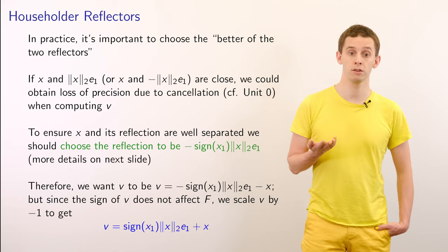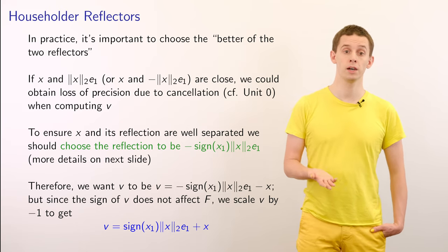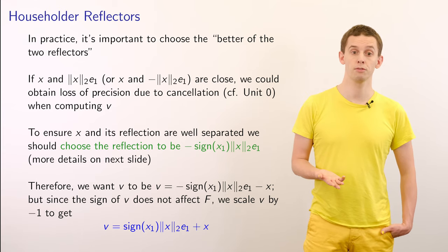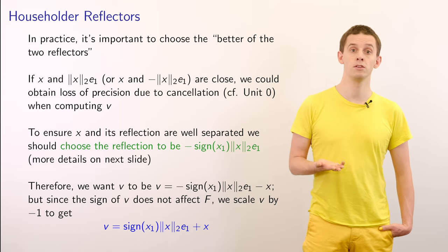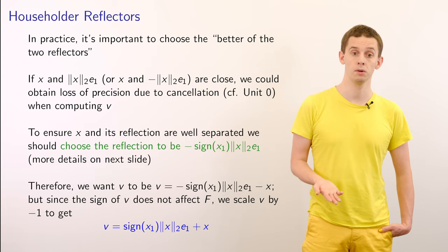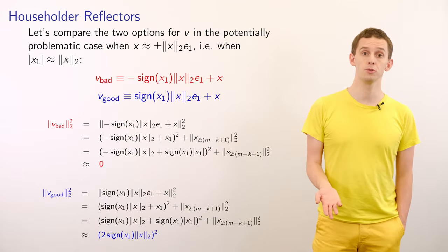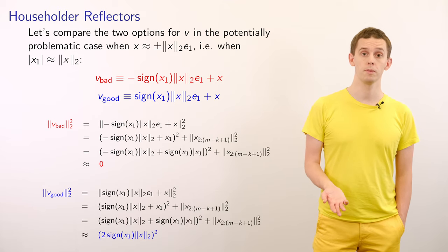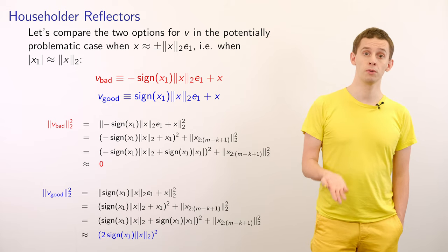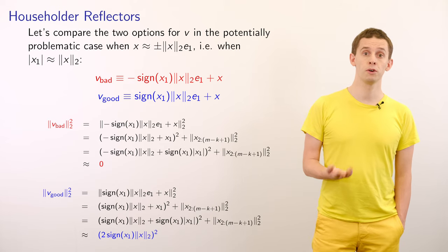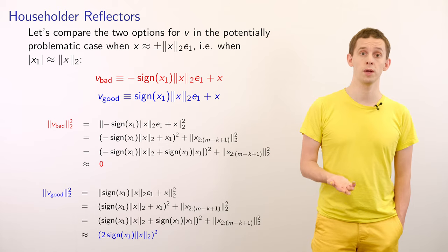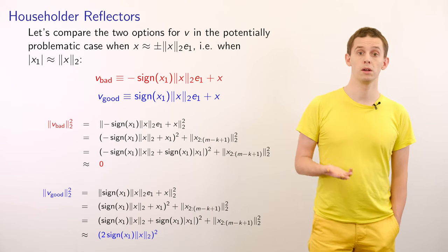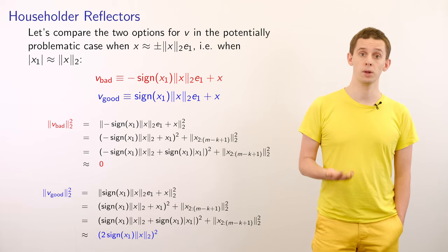To ensure that x and its reflection are well separated, we should choose the reflection to be equal to minus sign(x_1) times the Euclidean norm of x multiplied by e_1, where x_1 is the first component of x. Therefore, our vector V should equal minus sign(x_1) times the Euclidean norm of x times e_1 minus x. Since the sign of V does not affect F, we scale V by minus 1 to get V equal to sign(x_1) times the Euclidean norm of x times e_1 plus x.